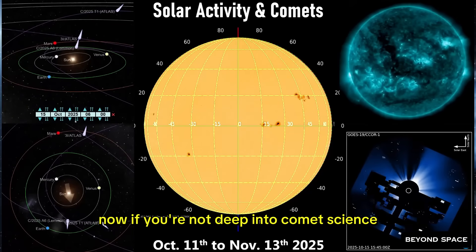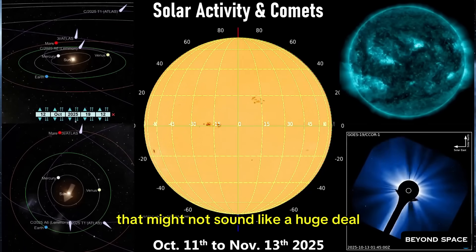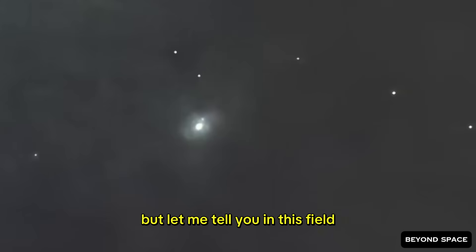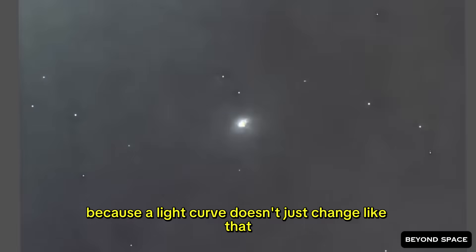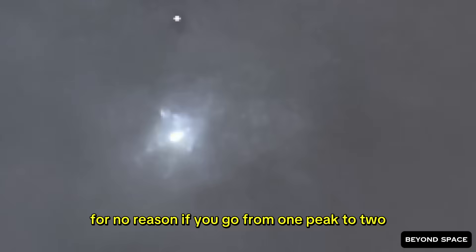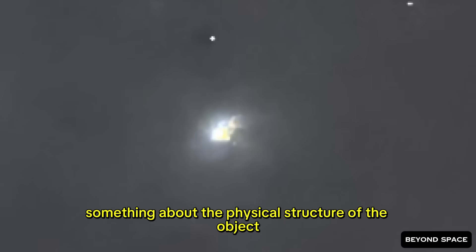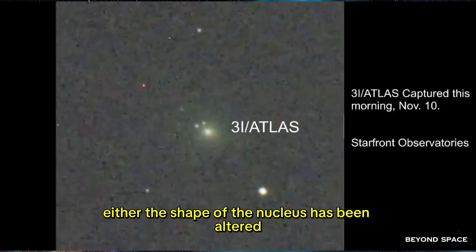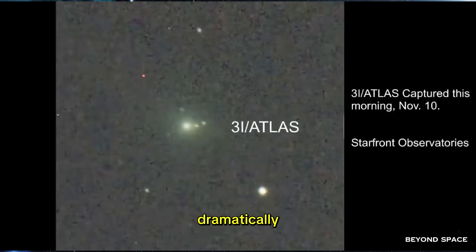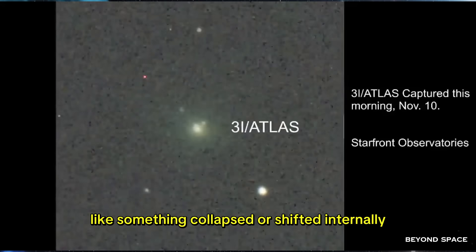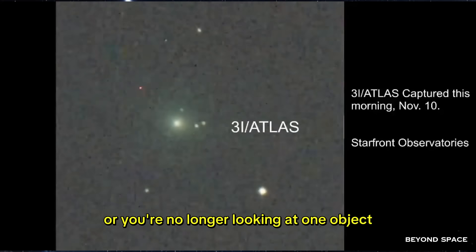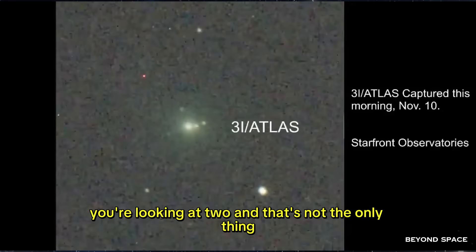If you're not deep into comet science, that might not sound like a huge deal, but let me tell you, in this field, that is a massive red flag. A light curve doesn't just change like that for no reason. If you go from one peak to two, it means something about the physical structure of the object has changed. Either the shape of the nucleus has been altered dramatically, like something collapsed or shifted internally, or you're no longer looking at one object, you're looking at two.